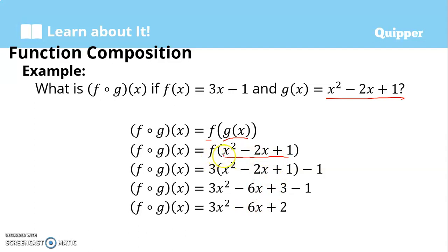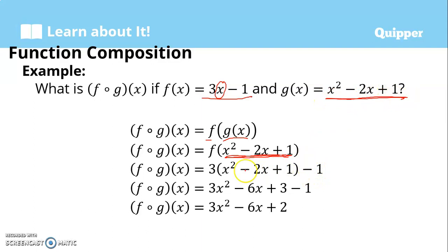Take note: f of x squared minus 2x plus 1 means the original x in f of x gets replaced by g of x. That is why we have — we substitute this — we have 3, and then instead of x, we write x squared minus 2x plus 1, and then minus 1. So again, the x in f of x is replaced by g of x. And then we simplify. By the distributive property, we distribute the 3 to each term inside the parentheses. So 3 times x squared is 3x squared; 3 times negative 2x is negative 6x; 3 times positive 1 is positive 3; and then we have minus 1.